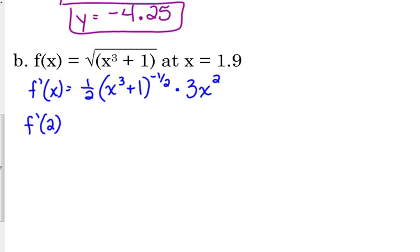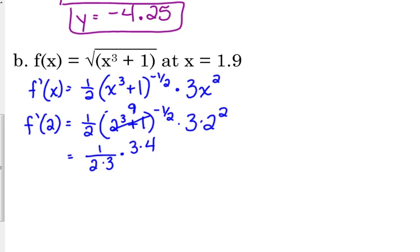Alright, 2 is the closest whole number. So I'm going to plug in 2 into my derivative. We've got 1 half times 2 cubed plus 1 to the negative 1 half times 3 times 2 squared. 2 cubed plus 1 is 9. And 9 to the negative 1 half, well that's the square root of 9 in the denominator. So that is 3 times 3 times 4. So our 3's cancel, and then we've got 1 half times 4, which is 2. So that's our slope of our tangent line. We need a point. So we know the x coordinate is 2. We need the y coordinate. So the y coordinate would be the square root of 2 cubed plus 1, which we just did a second ago, which is 3.